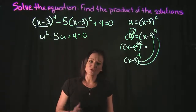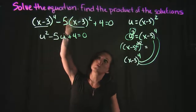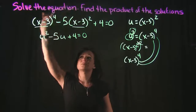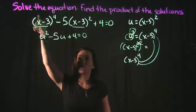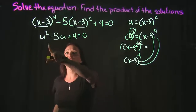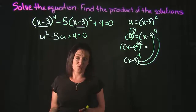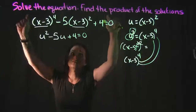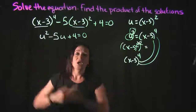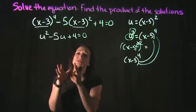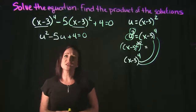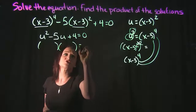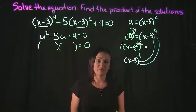That's how u-substitution works — we use the greatest common factor to substitute into our other term. As you can see, u squared minus 5u plus 4 equals 0 is much easier to solve than the original equation. Since this is a quadratic equation, my first approach is to see if we can factor it.